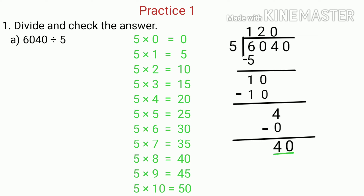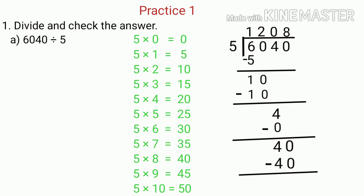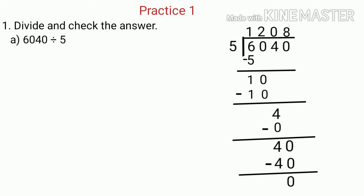Now we bring down the last digit of the dividend, that is 0, and the number becomes 40. We compare 40 and 5 — 40 is greater than 5, so we divide 40 by 5. We need to find how many times of 5 is equal to or nearest to 40. We know that 8 times of 5 is equal to 40, so we write 8 as the quotient above 0. Since 5 multiplied by 8 is 40, we write 40 below and subtract — 40 minus 40 is 0. Since there are no digits left to bring down, the division is done.